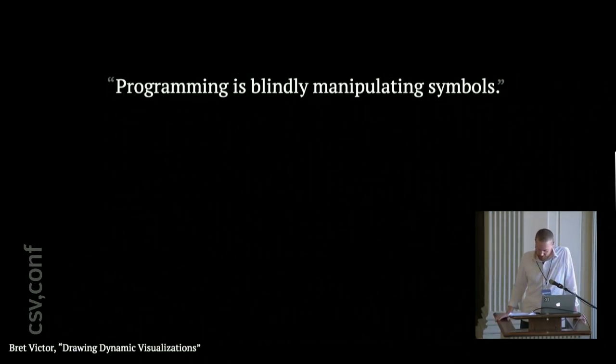So Brett Victor gives this concise definition of programming. Programming is blindly manipulating symbols. And by blindly, he means that we can't see the results of our manipulation. We can edit a program, we can rerun it, we can diff the output. But programs are complex and dynamic. And so this approach is not really a direct or an immediate observation of our edit. And by symbols, he means that we don't sort of directly manipulate the output of our programs. We operate in abstractions. And these abstractions can be powerful, but they can also be difficult to grasp. In other words, or in Donald Norman's terms, these are the gulf of evaluation and the gulf of execution.